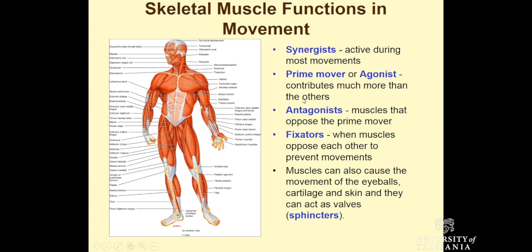The term synergist refers to muscles which are active during most movements. Our postural muscles, for example, are moving most of the time. In a movement, the muscle which brings about the largest proportion of an action is known as the prime mover or agonist. For example, in flexion of the elbow, the biceps brachii muscle is our prime mover.